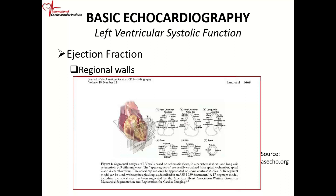The key thing is not to memorize but to understand the pattern. The lateral wall is divided into basal, mid, and apical. The septum is also divided into basal, mid, and apical. The apical cap is separate. In the two-chamber view, on top you have the anterior wall, on the bottom the inferior wall. The basal is always closer to the mitral valve, the mid is where the papillary muscle is, and then the apical portion. So: basal anterior, mid-anterior, apical anterior; and basal inferior, mid-inferior, apical inferior.